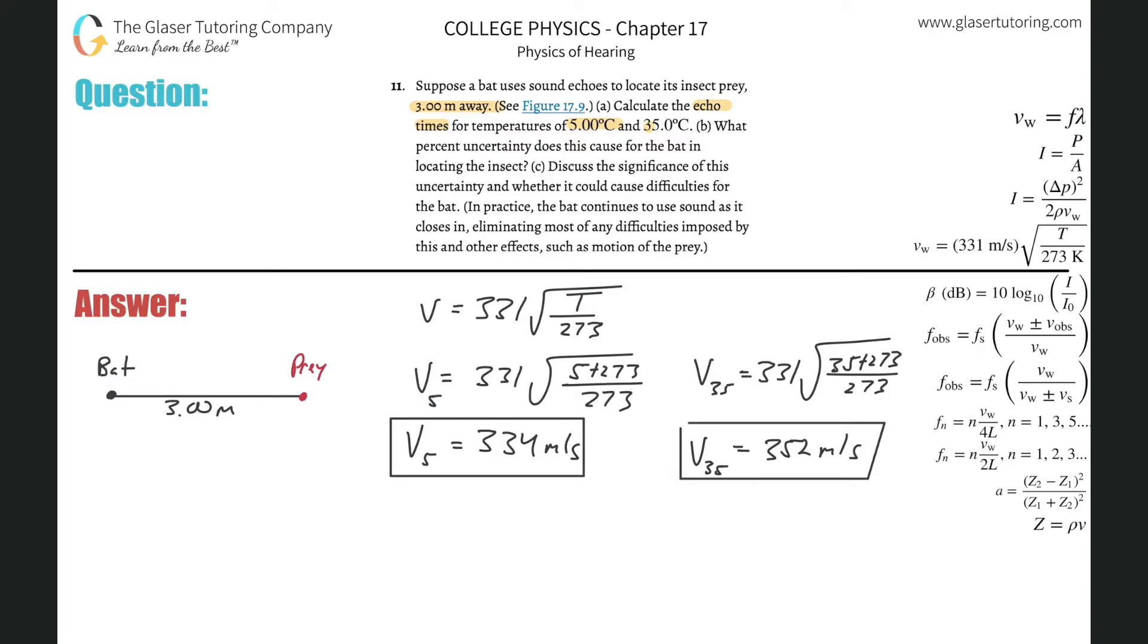So now we have the velocities of the sound. Now here's the bat, here's the prey. The bat sends out a sonar signal essentially, it travels, hits the prey, and then it travels back. So we know that the distance between the bat and the prey is 3 meters. However, the time it's going to take for the bat to register the response to its sonar is going to be double the time it takes to reach the prey.